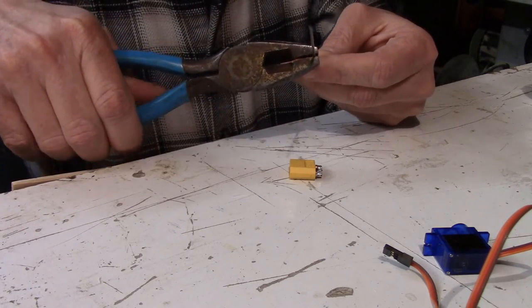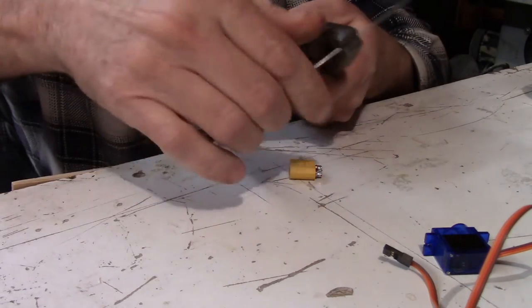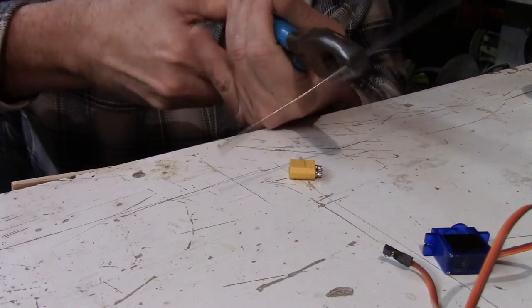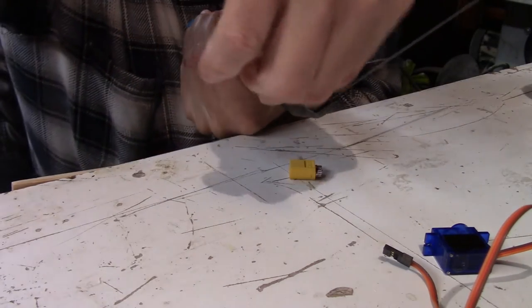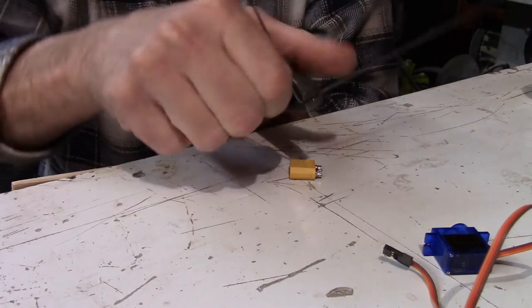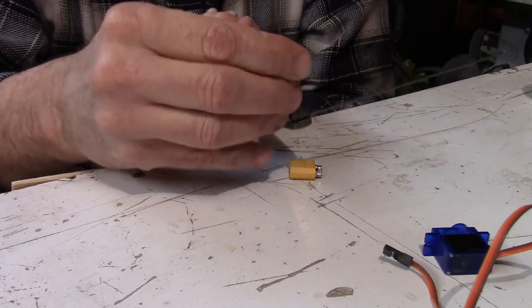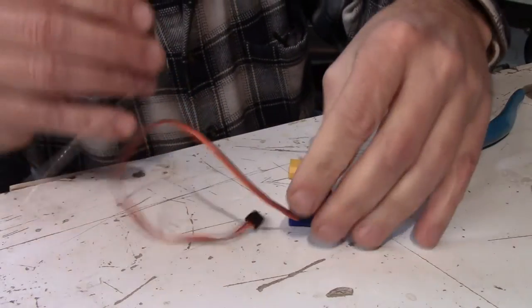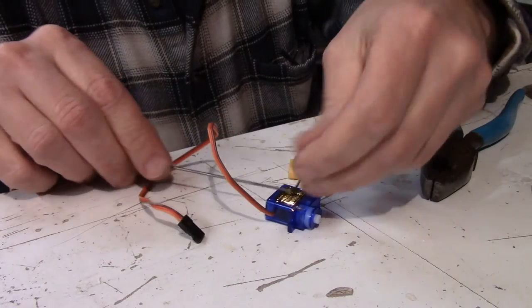So what I want to do start out with a 90 degree bend in the piano wire and then I take that 90 degree bend and I size it up against the servo. What I want to do is make like a squared off U shape that is the same size as the servo itself.